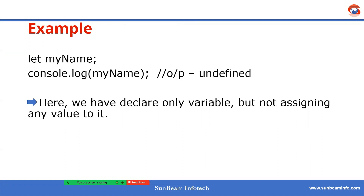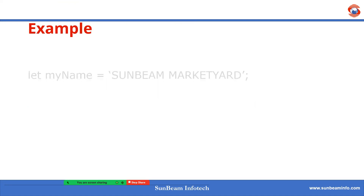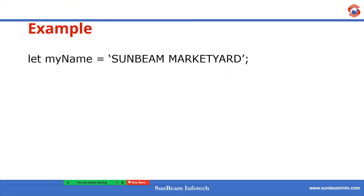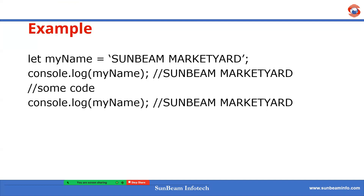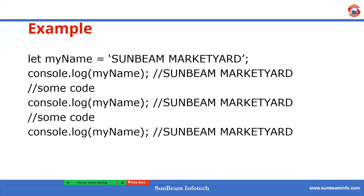Now I have to assign a value to my variable. So I am assigning the variable value 'sunbeam marketeer' to my variable name 'my'. Now if I log my name onto the console, I will get the output as 'sunbeam marketeer'. Suppose there are a thousand lines of code in my program — after those lines, I am again logging my name onto the console and I will get the same output 'sunbeam marketeer'. This is the beauty of a variable in JavaScript: I am accessing the same variable value throughout my program.